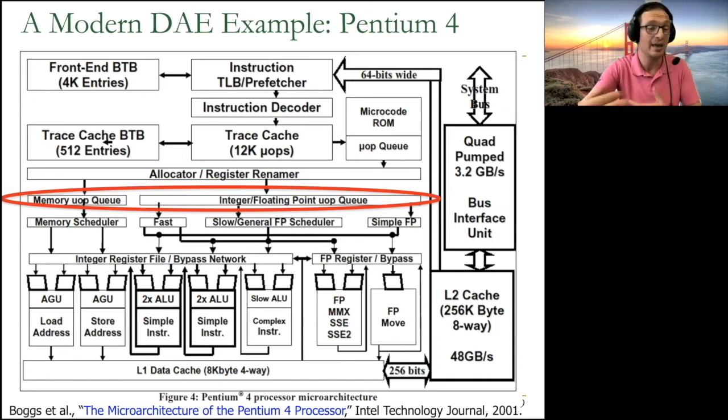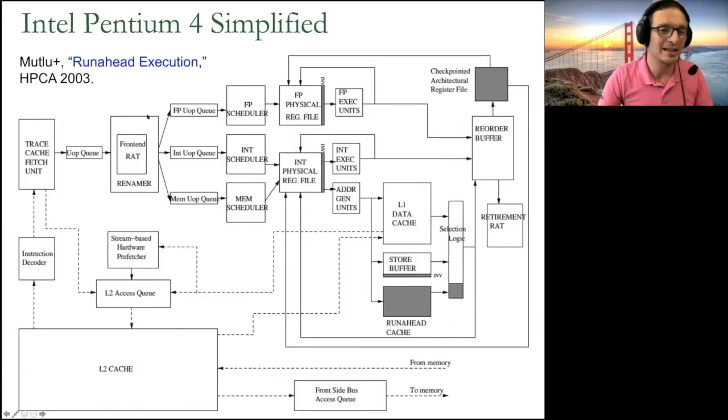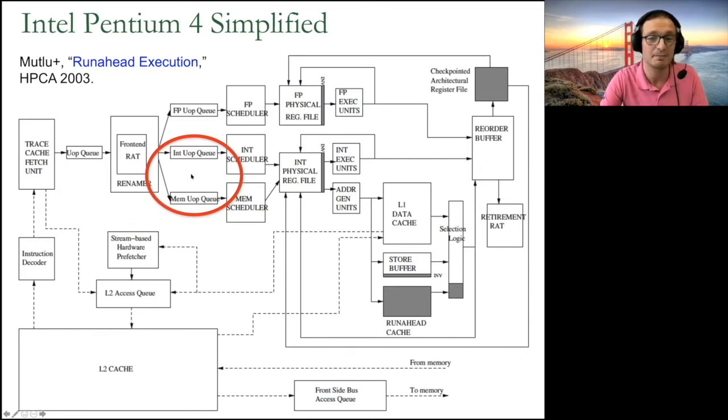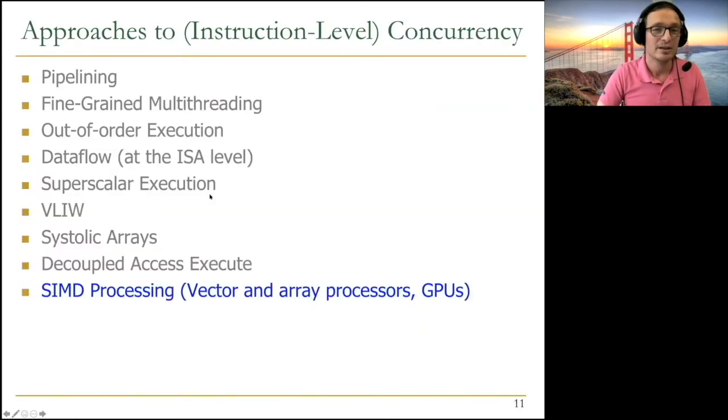And you also get different out-of-ordering between these different components. They don't, hopefully, step on the toes of each other, if you will. If you want to look at Pentium 4 simplified, this is another way of looking at it. You can see memory and integer decoupling. This is from my paper, a simpler view of the decoupled access and execute in Pentium 4. And you could actually extend the concept to different types of execution, FP execution, also FP and int execution as well. So that brings me to the end of decoupled access and execute.